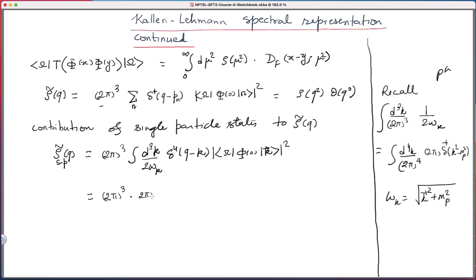Times d 4 k over 2 pi to the 4, times 2 pi delta plus k square minus m p square. And remember delta plus is, k square minus m p square is delta of k square minus m p square times theta of k 0. Let me close the window.